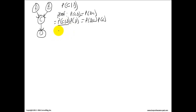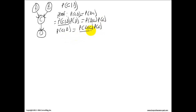Dividing both sides by probability of D, we get the expression for P(C|D). To further break this down, we need to solve for the probability of C and the probability of D.